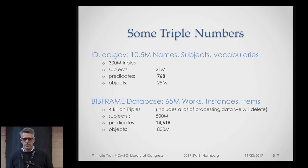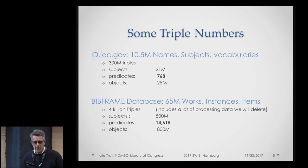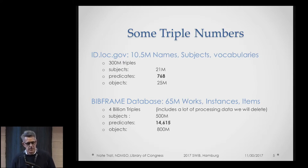To do a little comparison between ID and BibFrame as far as triples: ID has about 10.5 million records that are names, subjects, and other smaller vocabularies. It represents about 300 million unique triples, 21 million subjects, and only 768 predicates — which is interesting when you look at how many predicates there are for the BibFrame database.